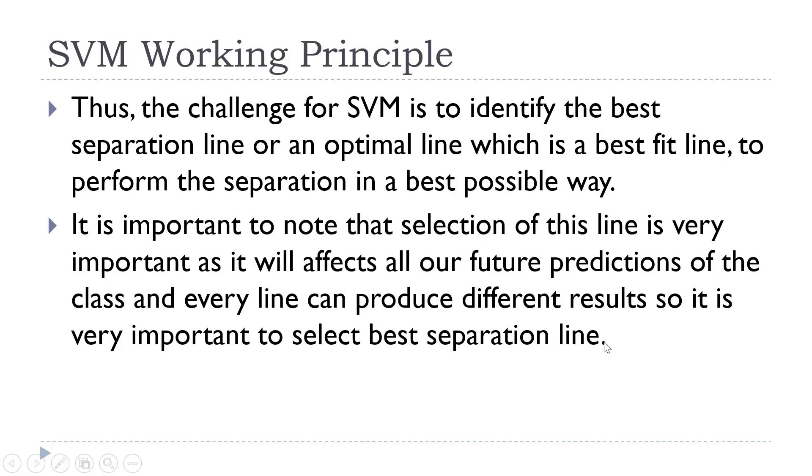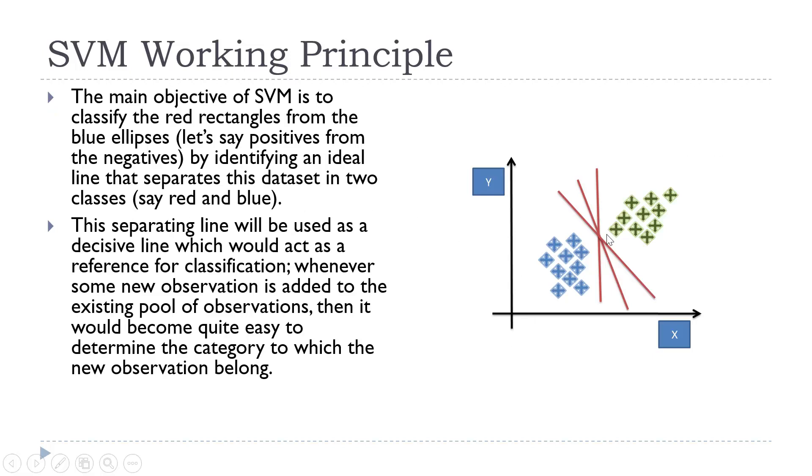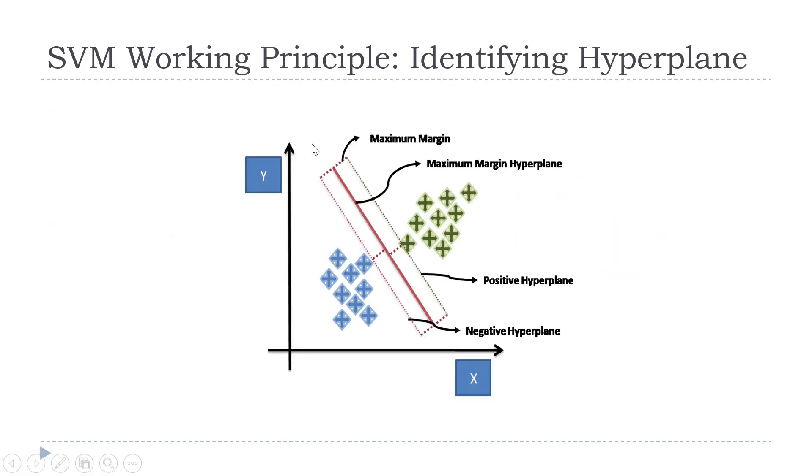SVM tries to identify a hyperplane by considering those fruits which appear to be identical and tries to classify them accurately. For this, it identifies a hyperplane which has the maximum difference from these two points.